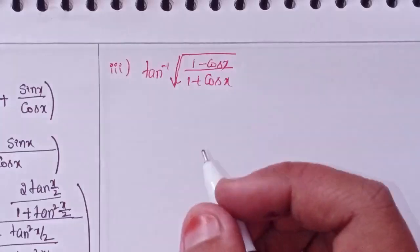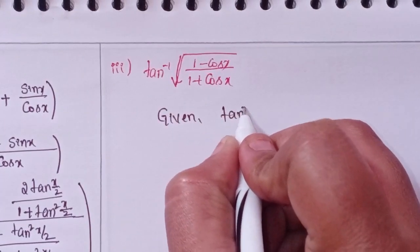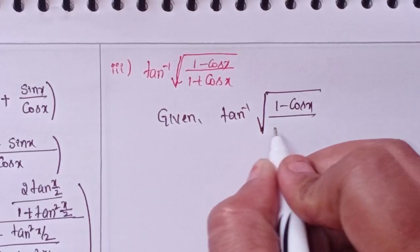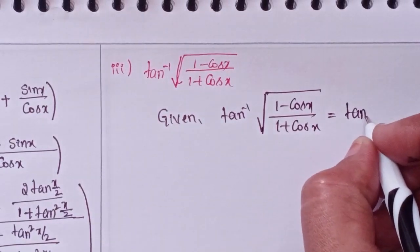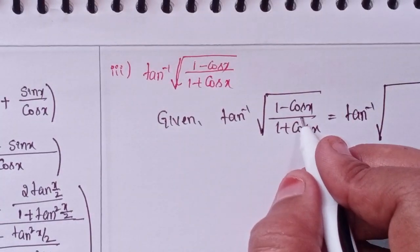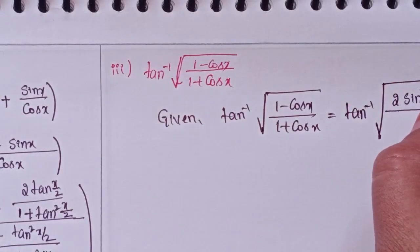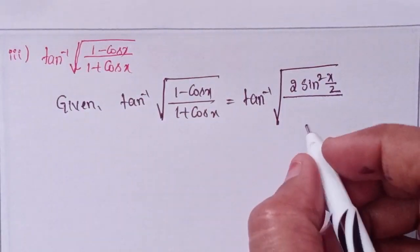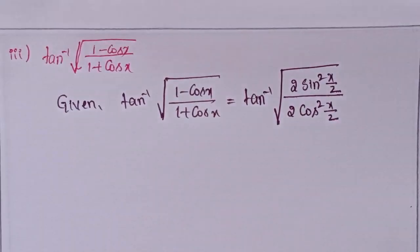And the third one: given tan inverse of square root of (1 minus cos x) divided by (1 plus cos x). Can I write 1 minus cos x as 2 sin²(x/2)? And 1 plus cos x in terms of cos means 2 cos²(x/2). The 2 cancels.